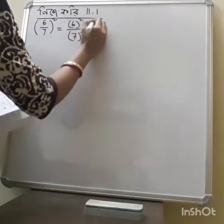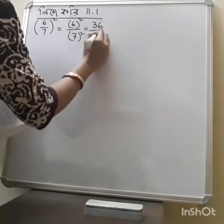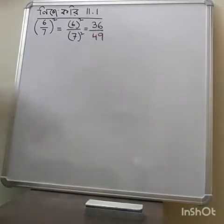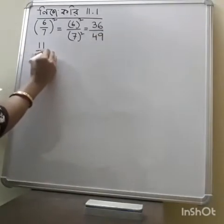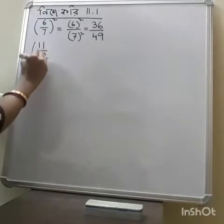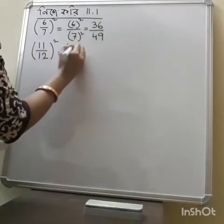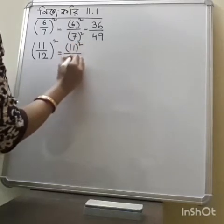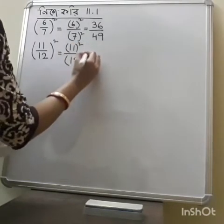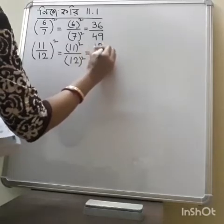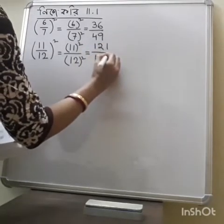6 square means 36 and 7 square is 49. Let me show one example. 11 by 12 — 4 square is equal to 11 square divided by 12 square. 11 square means 121 and 12 square means 144.